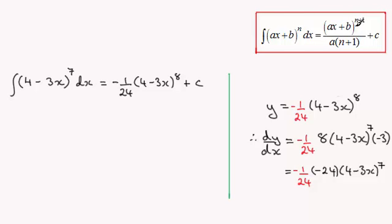But essentially, if you've got a linear factor of the form (ax + b)^n, it can be shown that you get that linear factor to the power n+1 all divided by (n+1) times a.